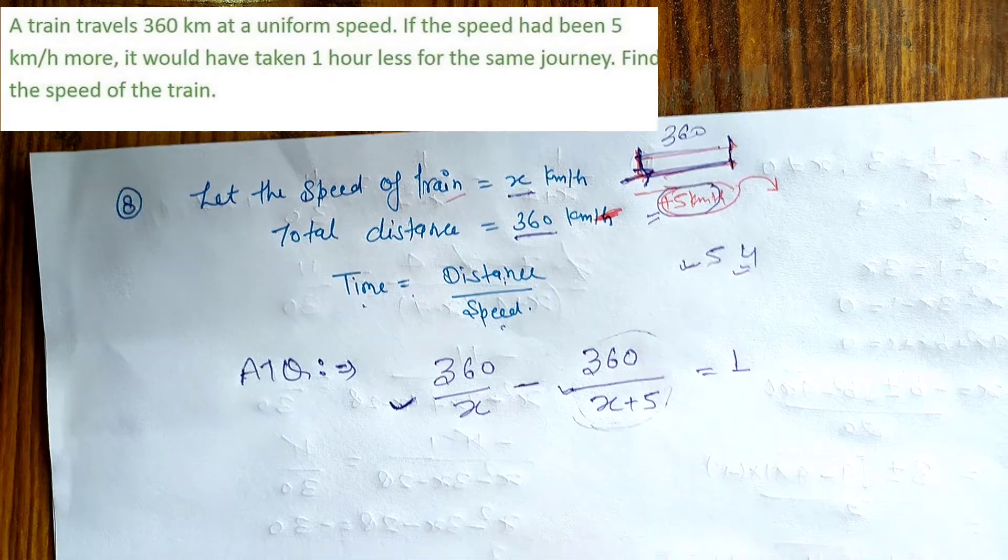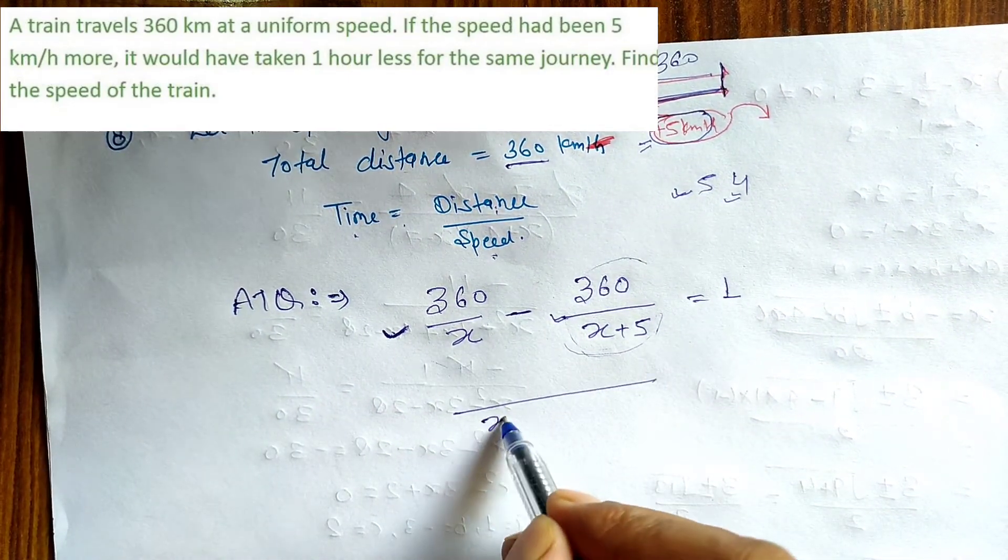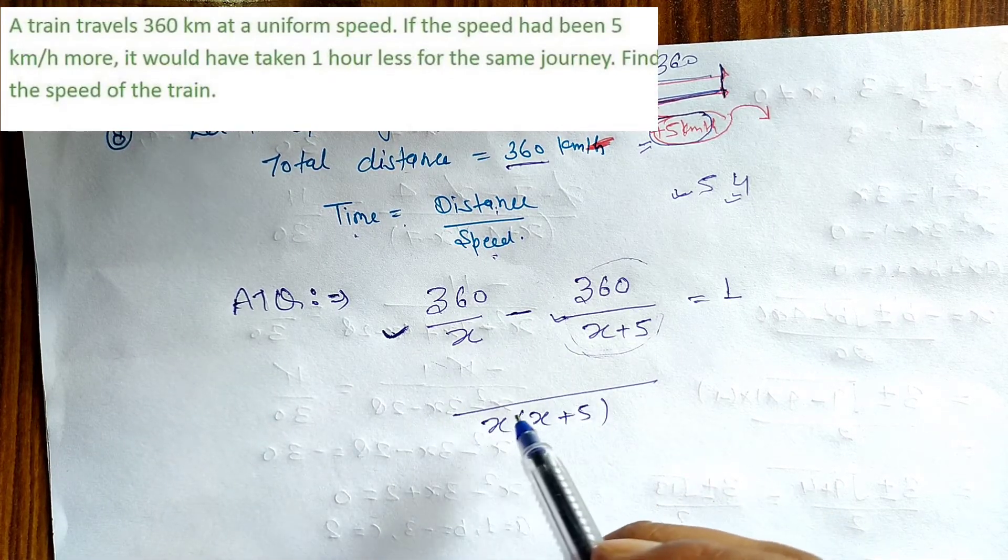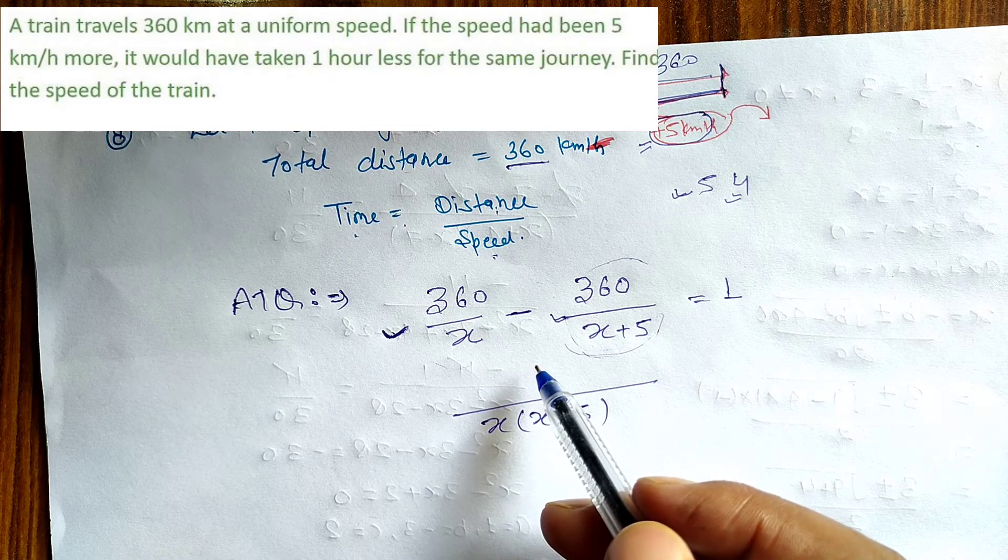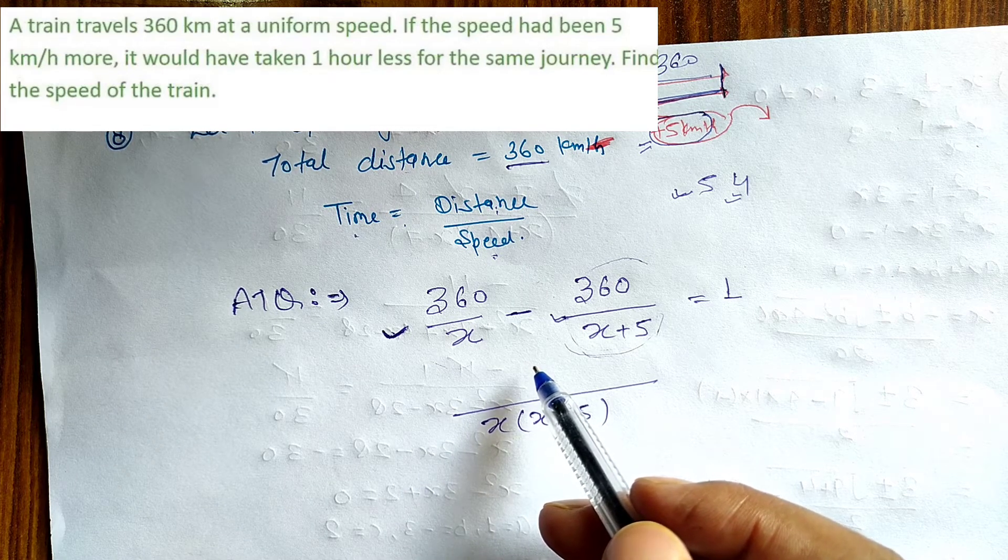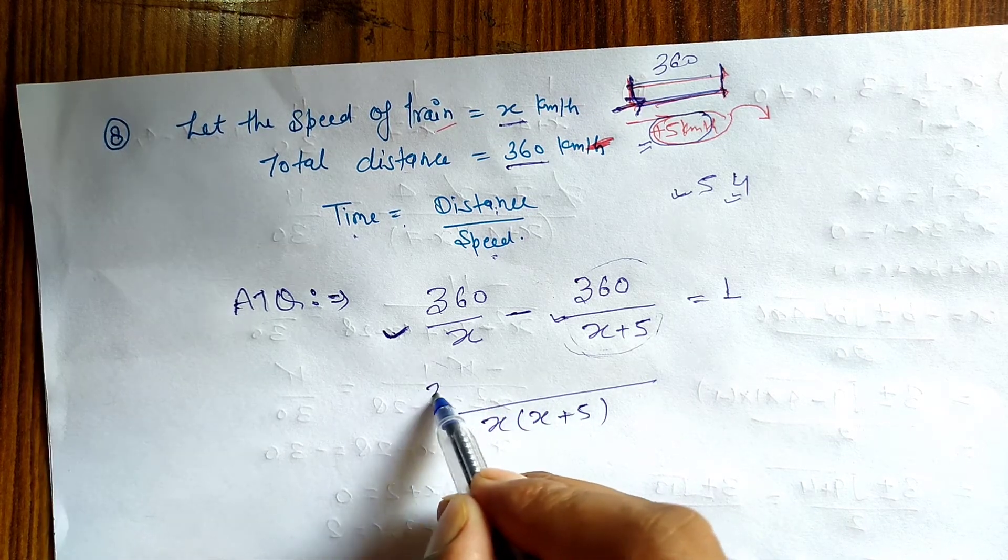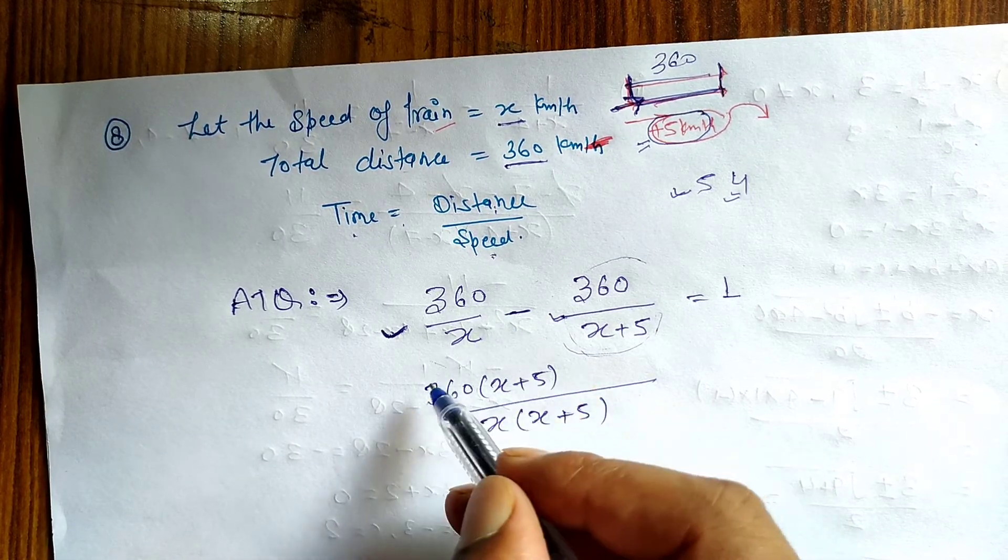Ye meri ek format ho gaya ki isse mujhe equation nikal ni hai aur uske baad mujhe answer mil jayega. So ab kya karna, mujhe LCM lena hai: x aur x plus 5. This type ke questions jitne bhi maine pichli wali exercises mein, isse method se bataye hain. Ye bilkul simple method hai, aapko shayad simple books mein nahi mile, lekin ye simple hai.